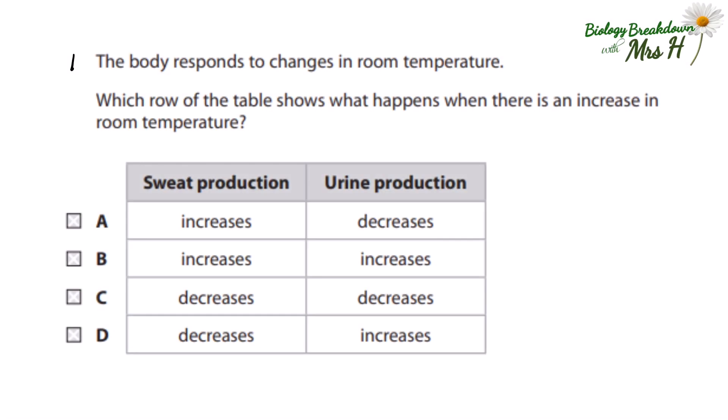Number one: the body responds to changes in room temperature. Which row of the table shows what happens when there is an increase in room temperature? We've got sweat production and urine production. Does the sweat production increase and does the urine production decrease? That is the right answer. You lose water when you sweat, so your kidneys will not make as much urine because they'll try to reabsorb more water to keep the water balance in your blood.